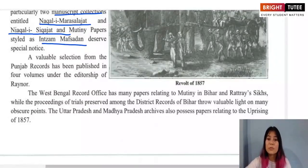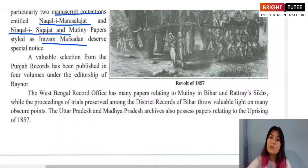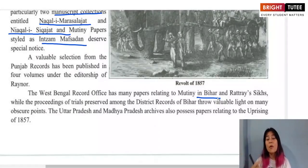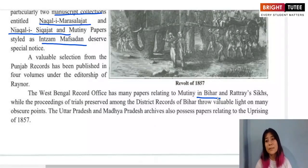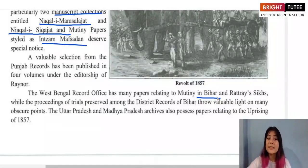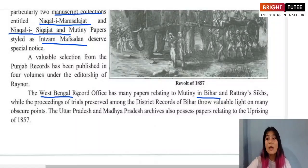In West Bengal there is also an archive with papers related to the mutiny — not only from Bengal but also from Bihar, since Bengal was once a large province that included present-day Odisha and Bihar. So the records in the West Bengal archive contain papers related to both present-day Bengal and Bihar.